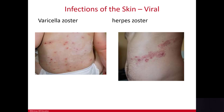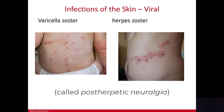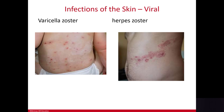Once varicella zoster resolves, it doesn't go away — it lives dormant on peripheral nerves and can re-emerge later as the herpes zoster virus, commonly called shingles. The herpes zoster eruption follows the line of a nerve, called a dermatome, appearing in a straight line. It is very painful, and pain can persist even after the rash resolves. If the vesicles are open they will weep fluid, and both varicella zoster and herpes zoster are contagious, so avoid contact with the weeping fluid.